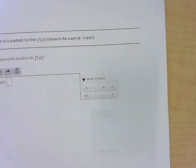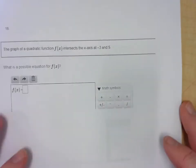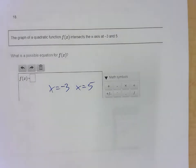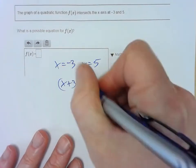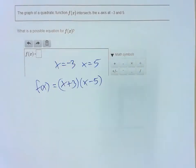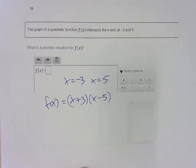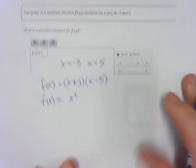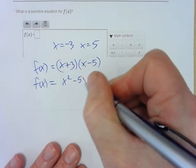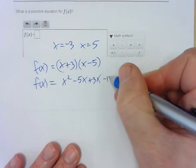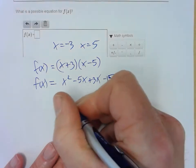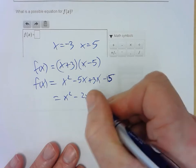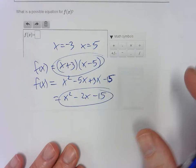Question 18: We have x equals negative 3 and x equals 5 as solutions and need to create a quadratic. Adding 3 gives (x plus 3) and subtracting 5 gives (x minus 5). FOILing out: x squared minus 5x plus 3x minus 15 gives f of x equals x squared minus 2x minus 15 in standard form, or (x plus 3)(x minus 5) in factored form.